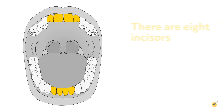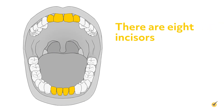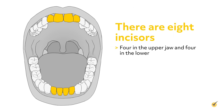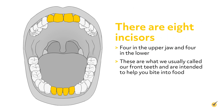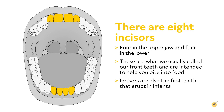There are eight incisors, four in the upper jaw and four in the lower. These are what we usually call our front teeth and are intended to help you bite into food. Incisors are also the first teeth that erupt in infants.